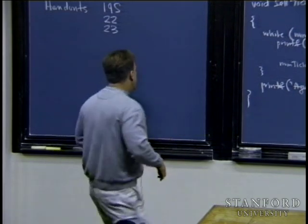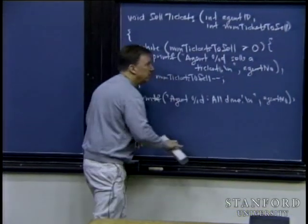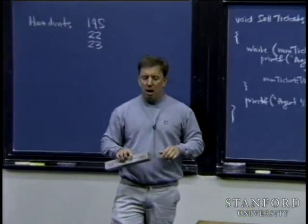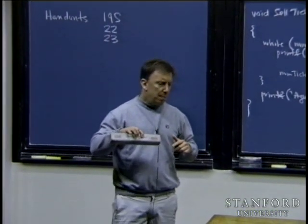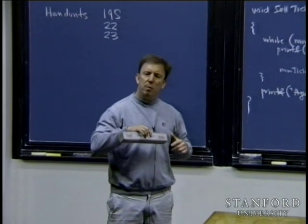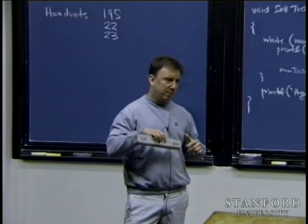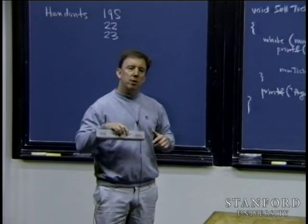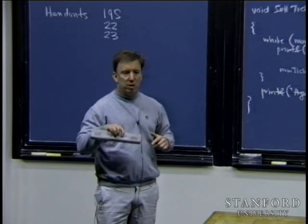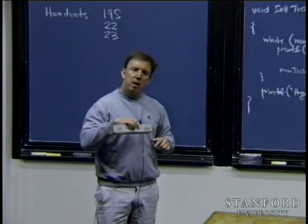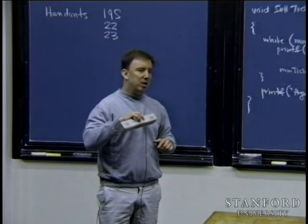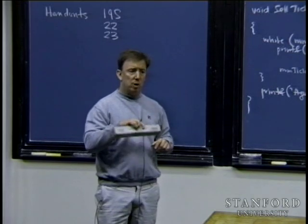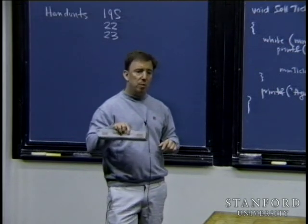What I want to do is set it up so all these ticket agents follow the same function — the same recipe for selling tickets — but they all seemingly run at the same time. In order to do that, we have to use a thread package — a library we've written here in CS107. It turns out that while C and C++ are standard, thread packages to support this type of thing are not standard across platforms.